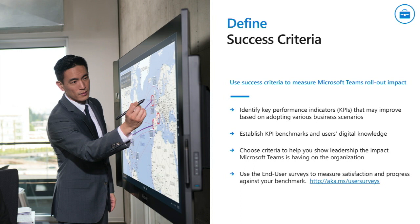To define success criteria: success is measured on more than just how many active users you have. For example, are your users happy — what rating do they give on their knowledge and usage of Teams? Maybe you want a score of eight out of ten for knowledge — people self-assessing their knowledge. On aka.ms/usersurveys we give you a bunch of different surveys to send to your users to measure those success criteria, to ensure that once you've deployed and completed your adoption, they are happy and you've met your adoption goals.